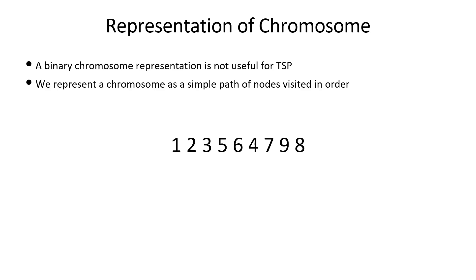We represent a chromosome as a simple path of nodes visited in order. Here the path taken is from 1 to 2 to 3 all the way to 8 and then back to 1. This is called a path-based representation. There are other representations as well such as edge-based representation which are not explored here.